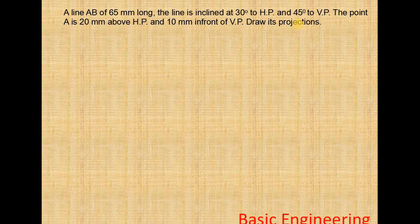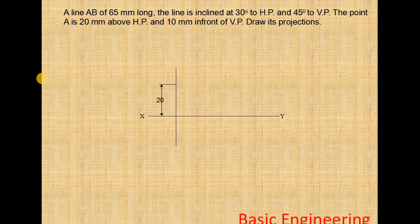First, draw the XY line. Next, draw the projection line. On this line, indicate the projections of point A. The front view of point A is 20mm above HP — measure 20mm from XY and mark it as A'. Then mark A at a distance of 10mm from XY below the line. Draw locus lines of any length from both A' and A.